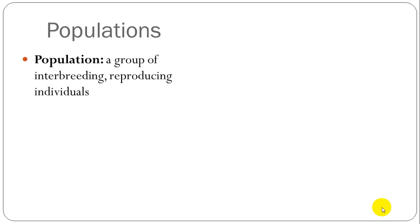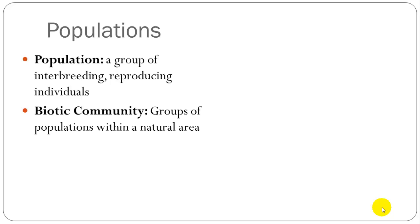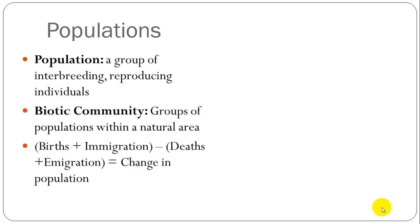A population is a group of interbreeding, reproducing individuals. A biotic community is a group of populations within an area and looks at the interactions between different species. Populations will change according to the birth rate and death rate, how many are coming in from other populations, and how many are leaving — so immigration and emigration.